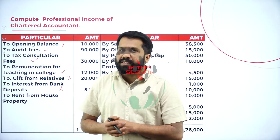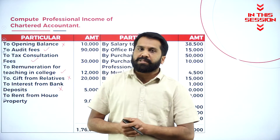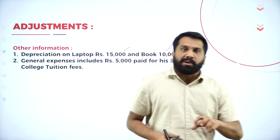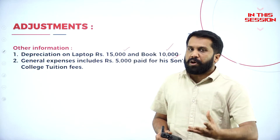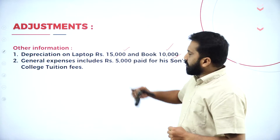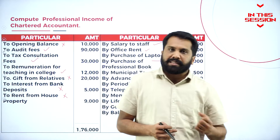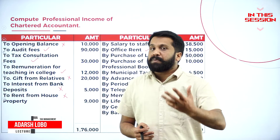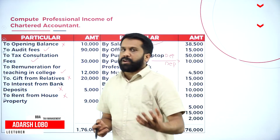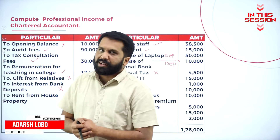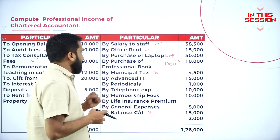Interest from bank deposit, we call it as income from other source. Since college tuition fees is personal drawing, we have to minus 5,000 from general expenses. Advanced IT is paid for your personal income — whatever personal income you got, on that we are supposed to pay tax. These are called advanced IT.